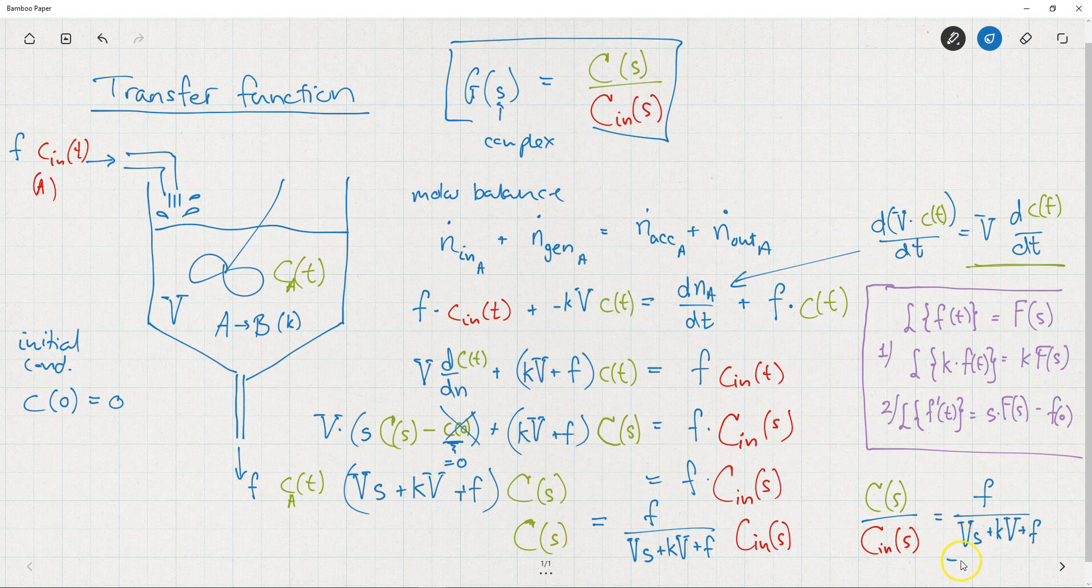And as you can see, this is then my transfer function for this system. We call this quantity here our input, or sometimes the forcing term. And this is our output, or response. And the transfer function is just the ratio between the Laplace transformed output divided by the Laplace transformed input. That gives you the transfer function.